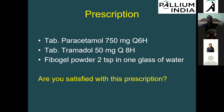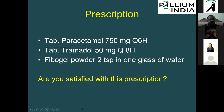For our patient, the current prescription is: paracetamol 750 mg 6-hourly, tramadol 50 mg 8-hourly, and fiber gel powder. A participant suggests adding an anti-emetic and an antiseptic. Another suggests reducing paracetamol based on body weight. Dr. Priya recommends adding an anti-emetic, which is appropriate.